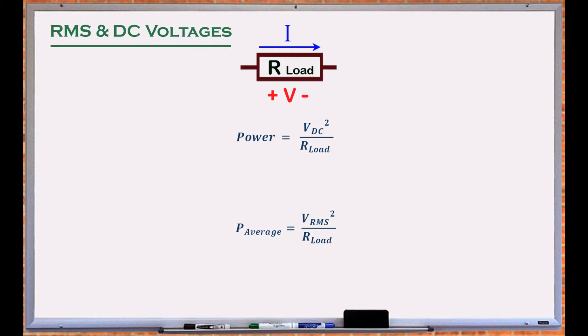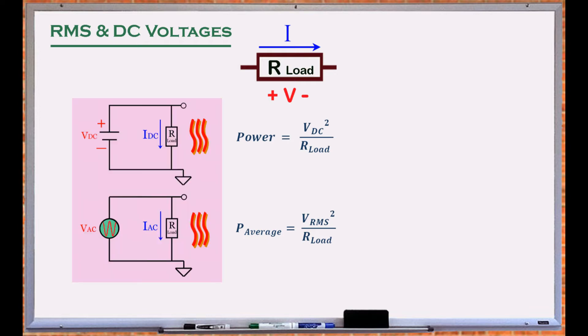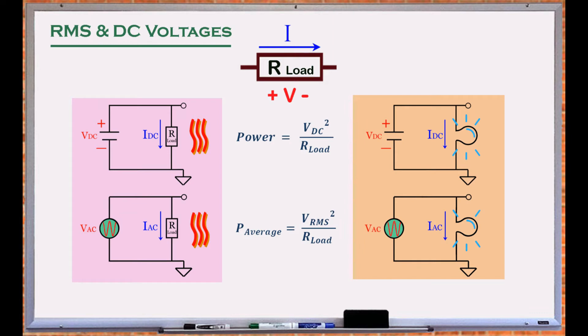A DC voltage that generates this amount of power is simply the square root of this average. Therefore it results in identical heat in a resistive element, or the same amount of brightness in an illuminated component such as a light bulb.